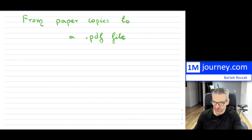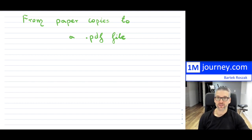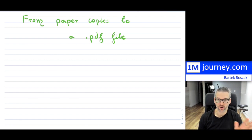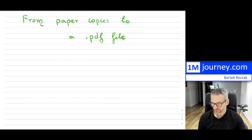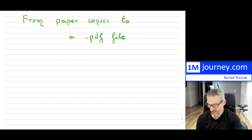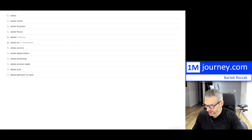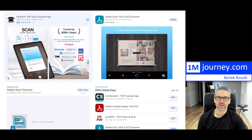The first thing I use is the app Adobe Scan. The reason I use it is it's extremely efficient, really crisp, and very well done. It's free and it can be downloaded for both iOS and Google Android devices. If you don't have Adobe Scan, go into your app store and search for it. I have already downloaded it, so for mine it says 'open' at the top right.